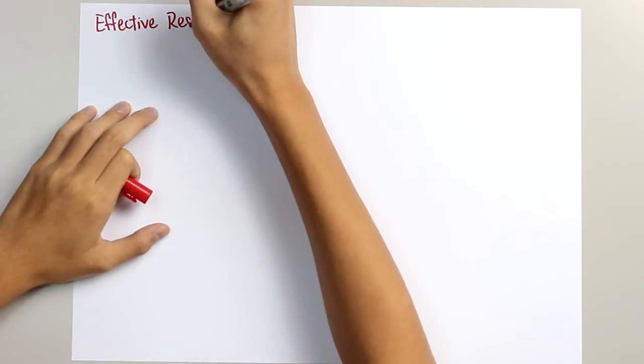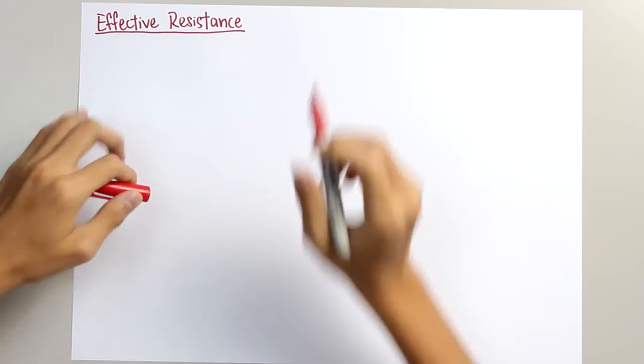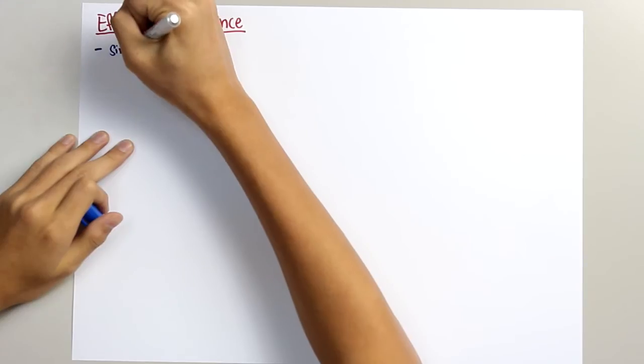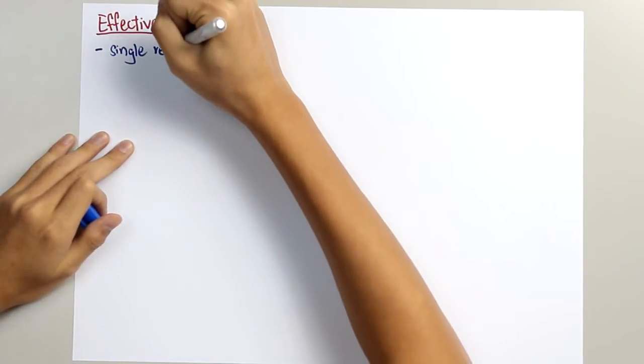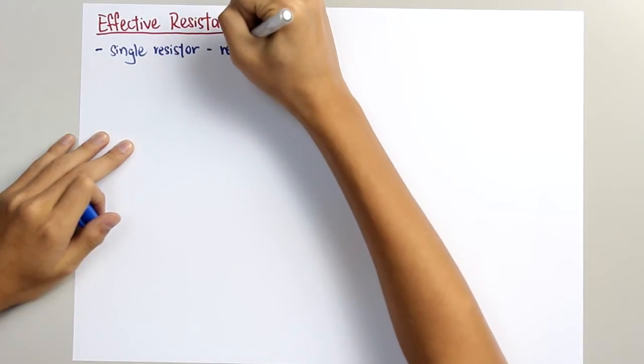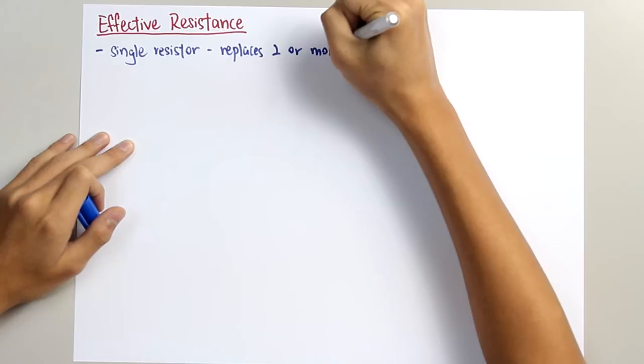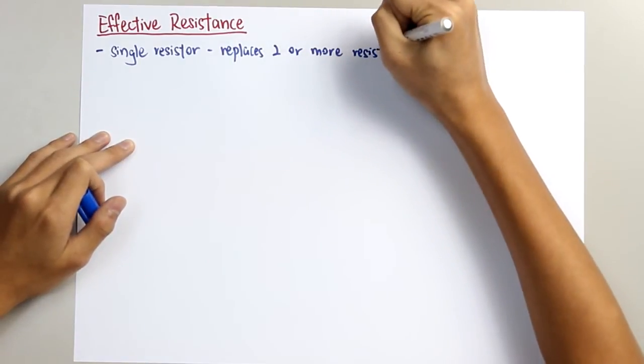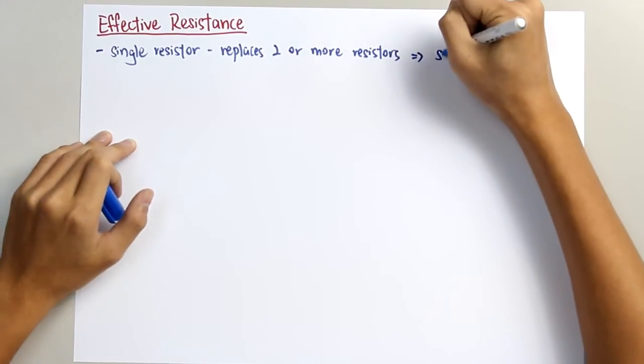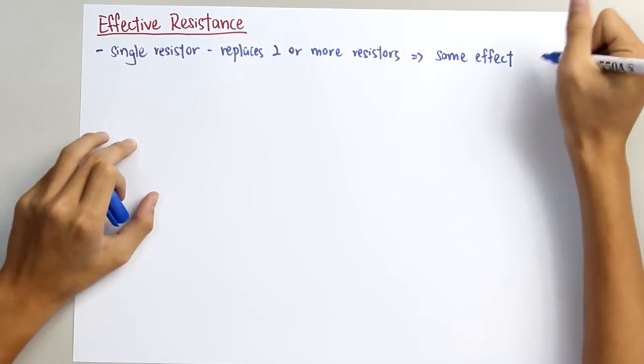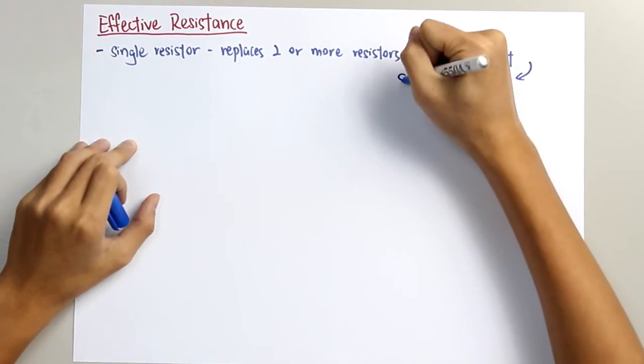Now, let's move to effective resistance. An effective resistor is a single resistor which replaces two or more resistors so that they can give the same effect on the circuit by allowing the same amount of current.